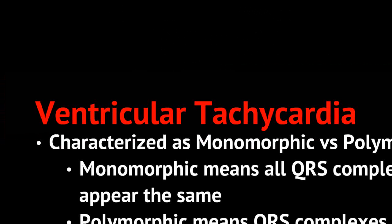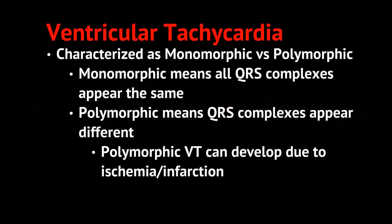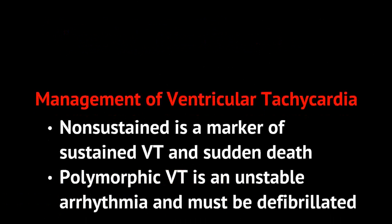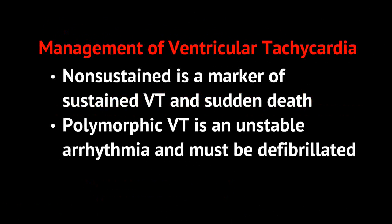VT can be characterized as monomorphic or polymorphic. Monomorphic means all the QRS complexes appear the same. Polymorphic means the QRS complexes appear different. Polymorphic VT can be due to ischemia and/or infarction. Note that non-sustained VT is a marker for risk of developing sustained VT and a risk factor for sudden death. Polymorphic VT is an unstable arrhythmia and must be defibrillated.